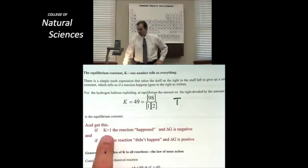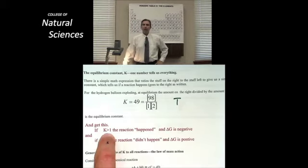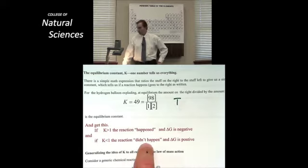Well, what can we say about K and whether a reaction has happened or not? Well, it makes sense that if I end up having K greater than 1, a reaction happened. If K is less than 1, then I say a reaction didn't happen.